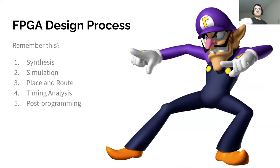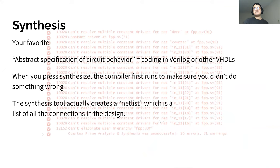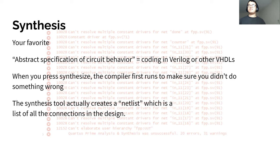Moving on to FPGA basics — here's the entire FPGA design process. First is synthesis, then simulation, then place and route, timing analysis, and post programming. Synthesis is something you're pretty familiar with by now: you describe circuit behavior using hardware description languages like Verilog or VHDL. When you press synthesize, the compiler checks your code, makes sure it's valid, and creates a net list. Every variable you've created is basically a net, and it connects all the designs into a net list. That's why code can pass synthesis but fail simulation — it creates the net list but doesn't yet establish the logic of how nets should be connected.